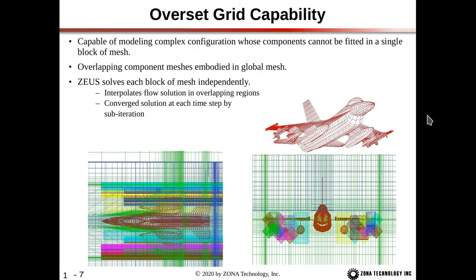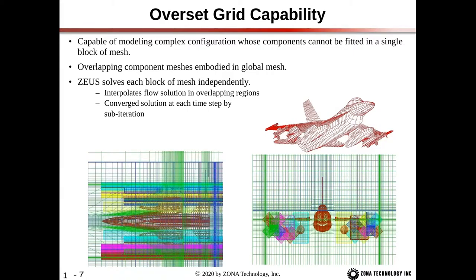Next, the overset grid. For the same aircraft with underwing stores added, if we project the entire aircraft onto the XY plane, the underwing stores and pylons will overlap with the wing — and overlapping components are not allowed. So we are required to use the overset grid. The overset grid capability models complex configurations whose components cannot be fitted into a single block of mesh. The overlapping component meshes are embodied in a global mesh, and during the solution, Zeus solves each block independently and interpolates the flow solution in the overlapping regions. A converged solution at each time step is obtained by sub-iteration.